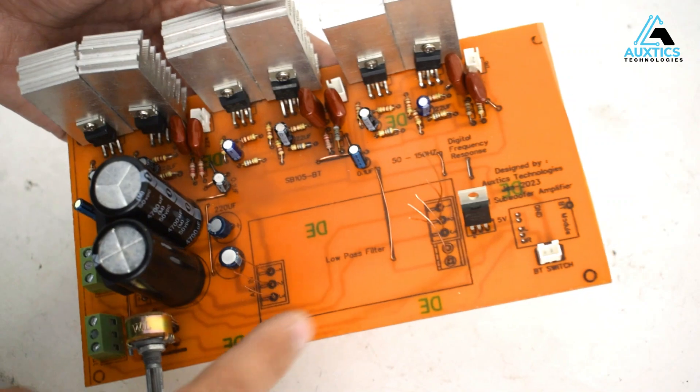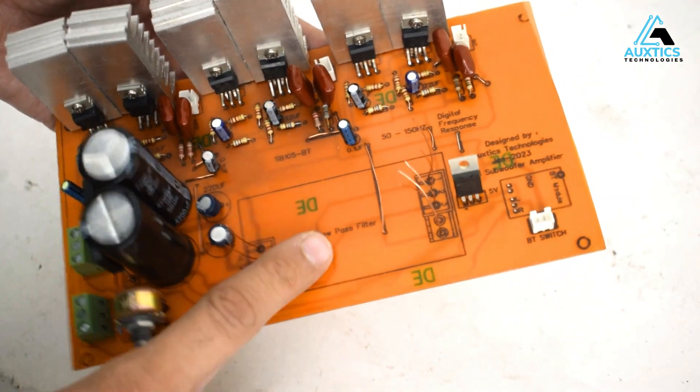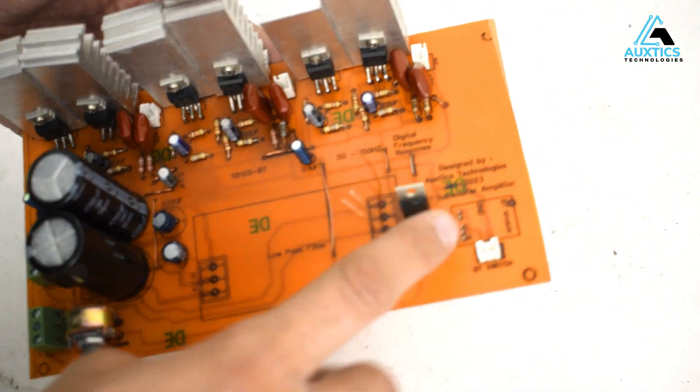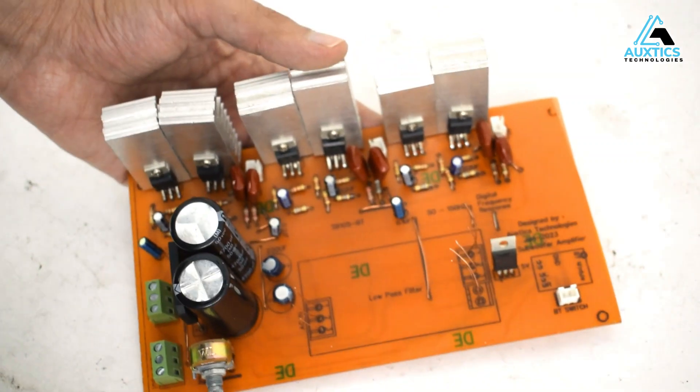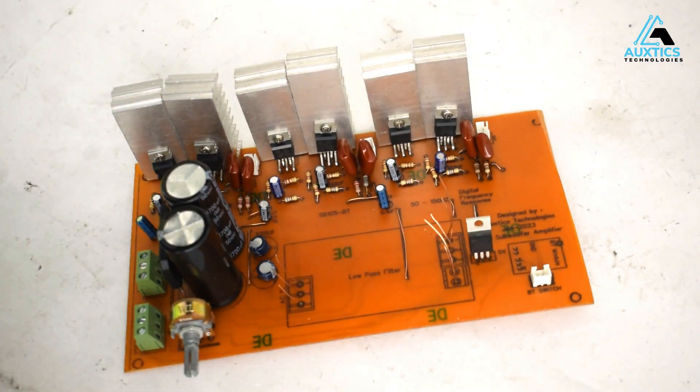So you can see here we have external low pass filter and here we have external Bluetooth module. I will show you how to use the low pass filter module.